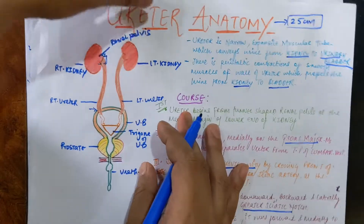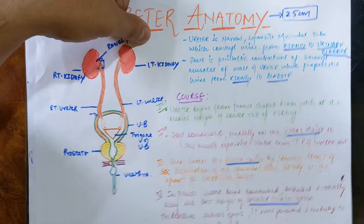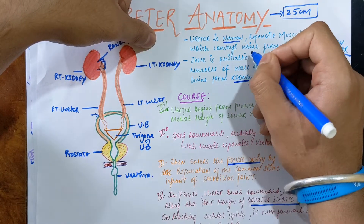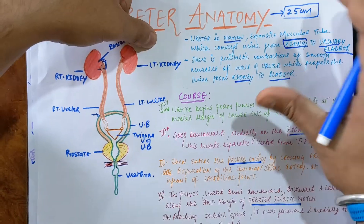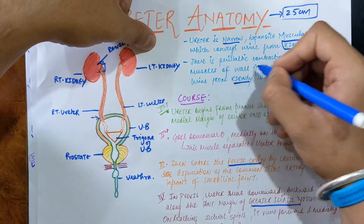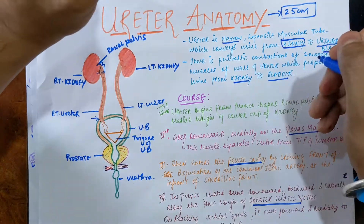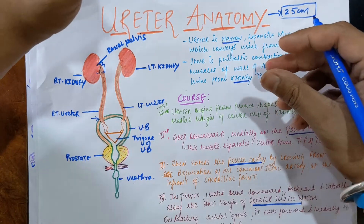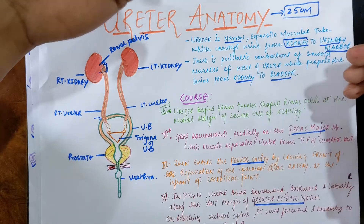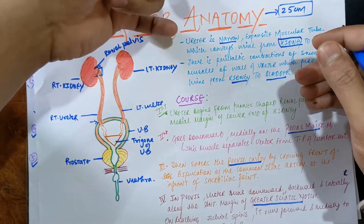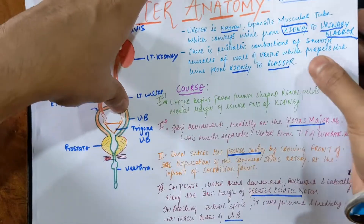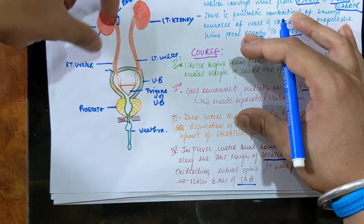Now the ureter is a narrow, expandable muscular tube which conveys urine from your kidney to the urinary bladder. The urine is propelled downward by peristaltic contractions present in the smooth muscles of the wall of the ureter. Because of these peristalsis contractions of the smooth muscles, urine actually propels from your kidney to the bladder.